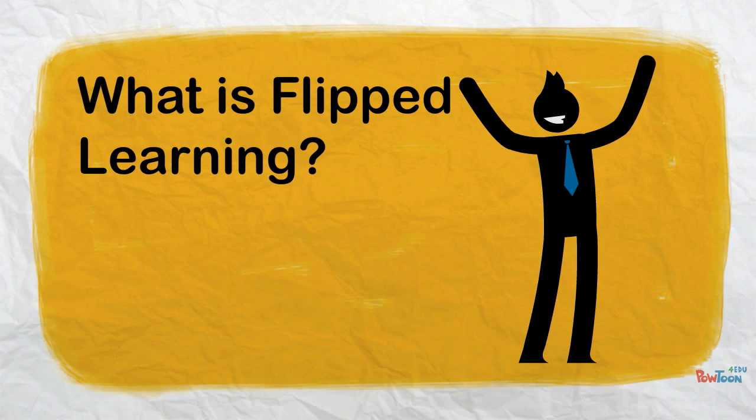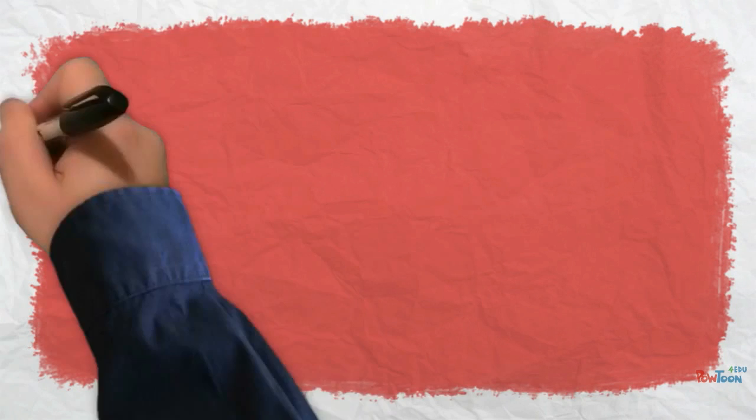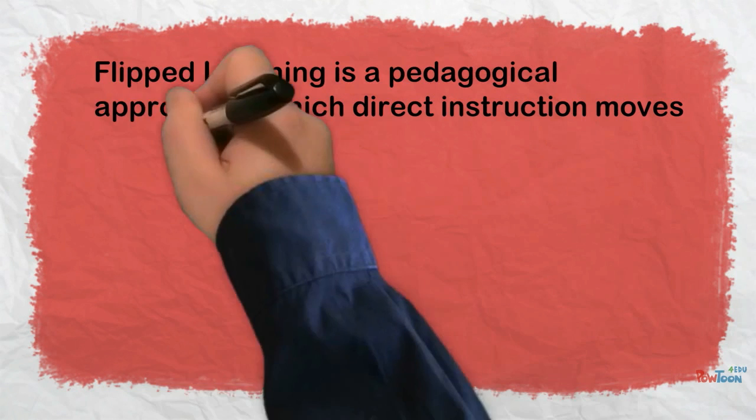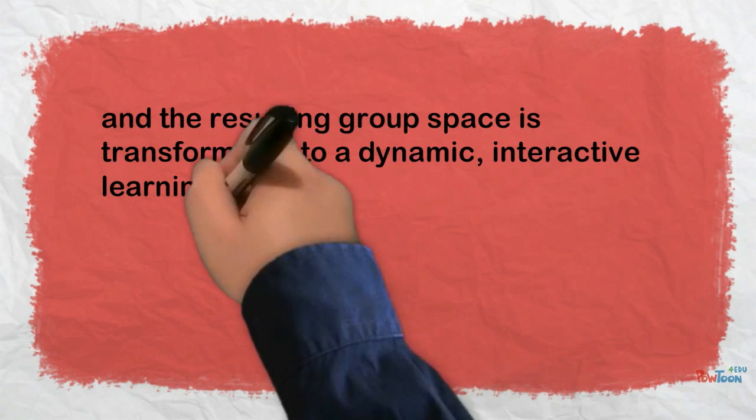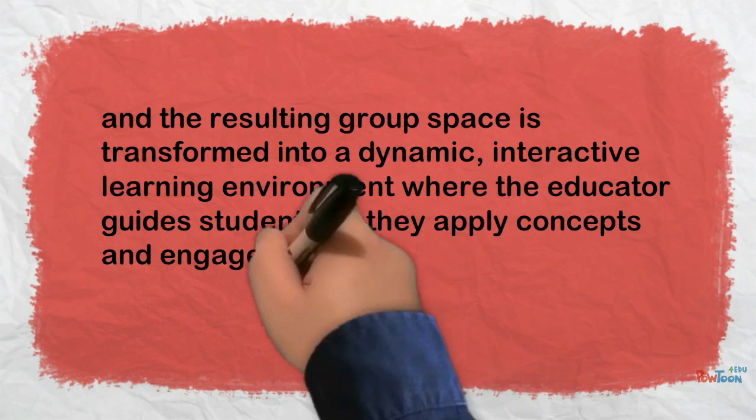Let's begin by having a common definition of what flipped learning is. Flipped learning is a pedagogical approach in which the direct instruction moves from the group learning space to the individual learning space, and the resulting group space is transformed into a dynamic, interactive learning environment where the educator guides students as they apply concepts and engage creatively in the subject matter.